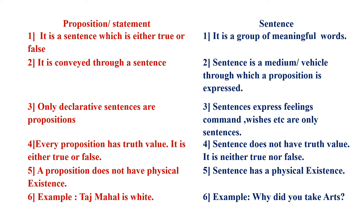Third difference: only declarative sentences are propositions, whereas sentences that express feelings, commands, wishes, etc. are only sentences. Fourth difference: every proposition has a truth value — it is either true or false — whereas a sentence does not have a truth value; a sentence is either correct or incorrect.